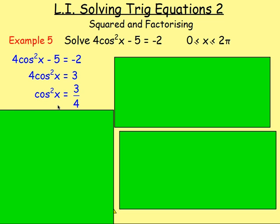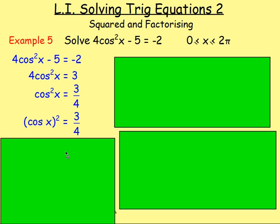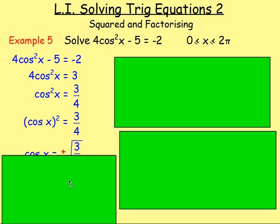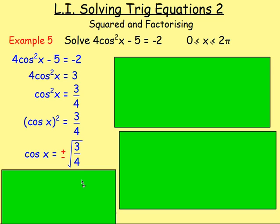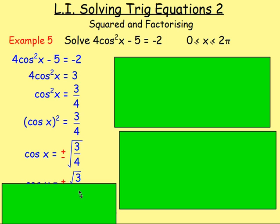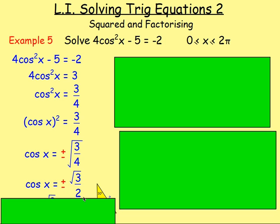cos²x means cos x times cos x, so it means cos x all squared. To get rid of the squared, you square root both sides — you'd have the square root of three quarters. Now, the square root of 49 is seven, but it could also be negative seven. We have to think about both the positive and the negative when taking the square root. The square root of three is just root three, and the square root of four is two.